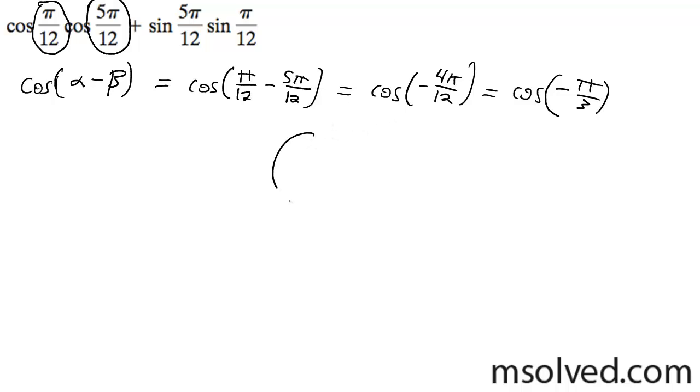I'm going to draw out my triangle here. Negative pi over 3 is right down here. So negative root 3, 2, 1.